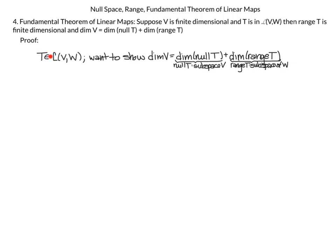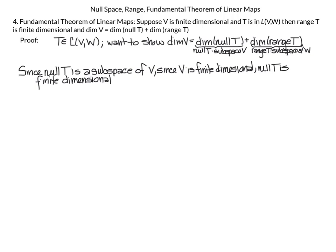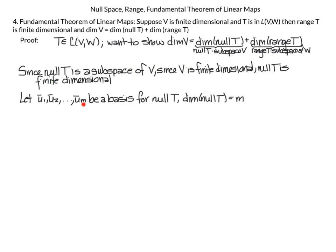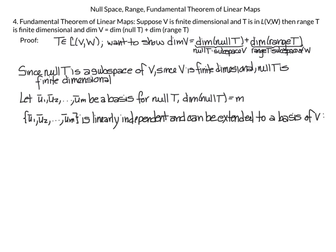To prove this, T maps from V to W and we want to show dim(V) = dim(null(T)) + dim(range(T)). Since null(T) is a subspace of V and V is finite dimensional, null(T) is also finite dimensional. Let u1, u2, …, um be a basis for null(T), so dim(null(T)) = m.